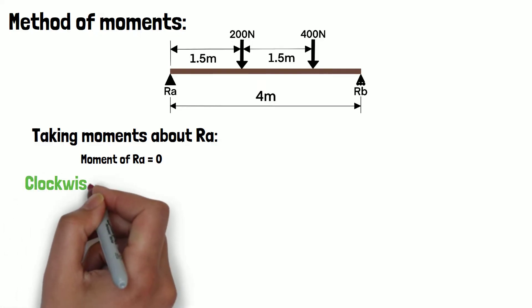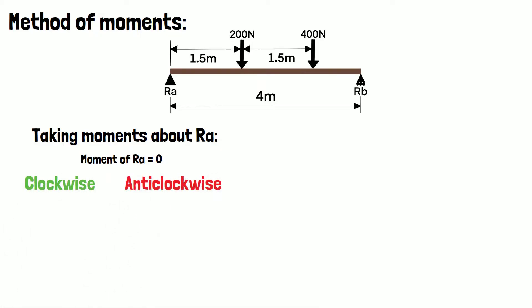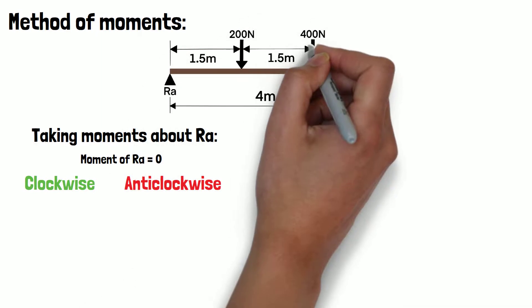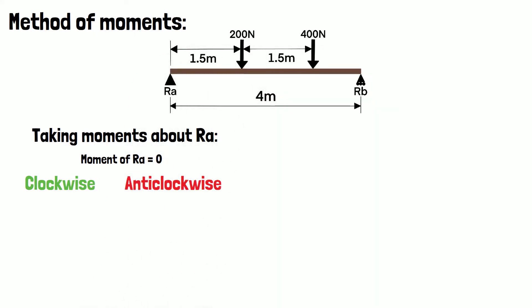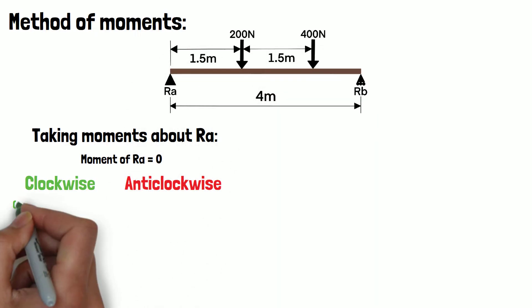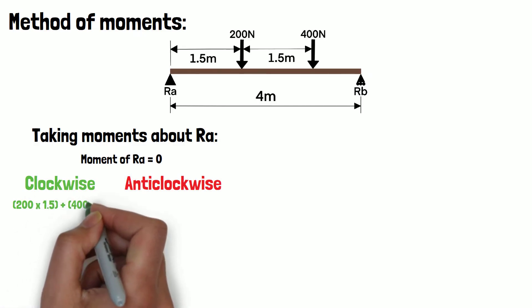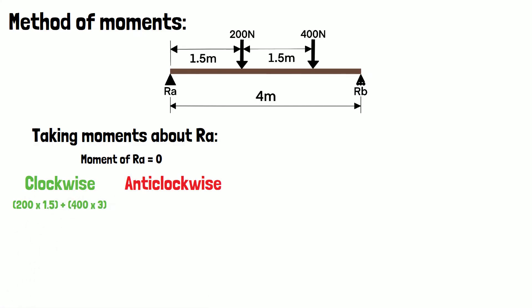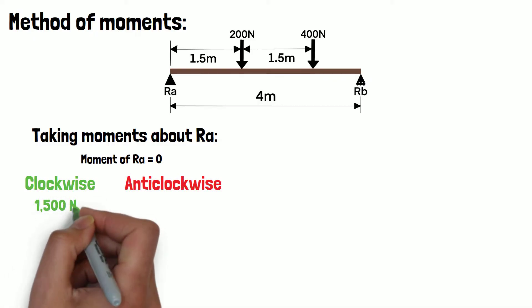Next we'll calculate the clockwise and anti-clockwise moments. For the clockwise moments we have a 200 newton load at a distance of 1.5 meters and a 400 newton load at a distance of 3 meters. So total clockwise moments equal 200 times 1.5 plus 400 times 3, which equals 1500 newton meters.